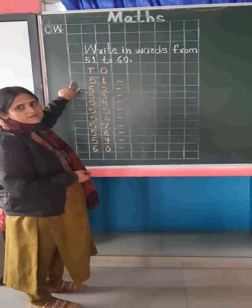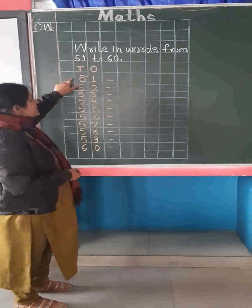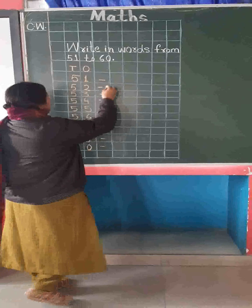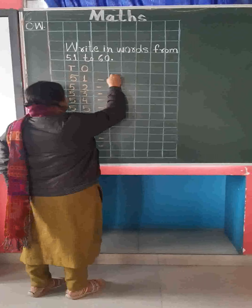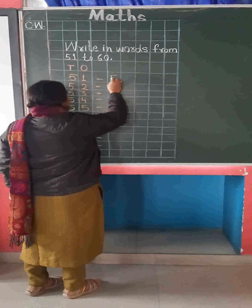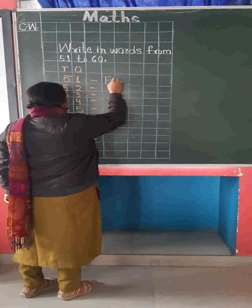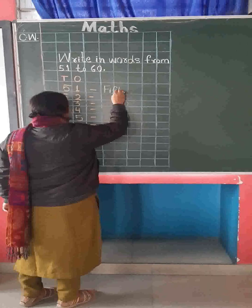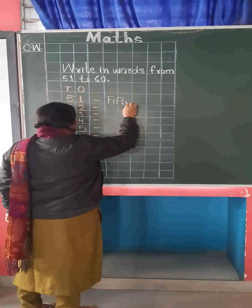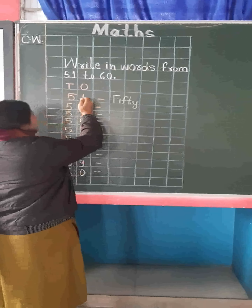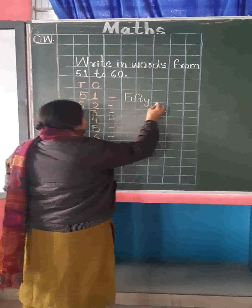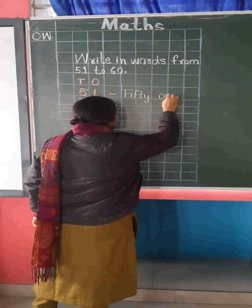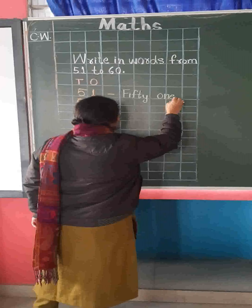We already know the spelling of 50. So first we will write here the spelling of 50: F, I, F, T, Y. 50. And here we will write the spelling of 1. 51.